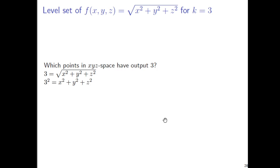So we just set 3 equal to the output formula, root x squared plus y squared plus z squared. If you square both sides, you have 9 equals x squared plus y squared plus z squared. That is a sphere of radius 3 centered at the origin.